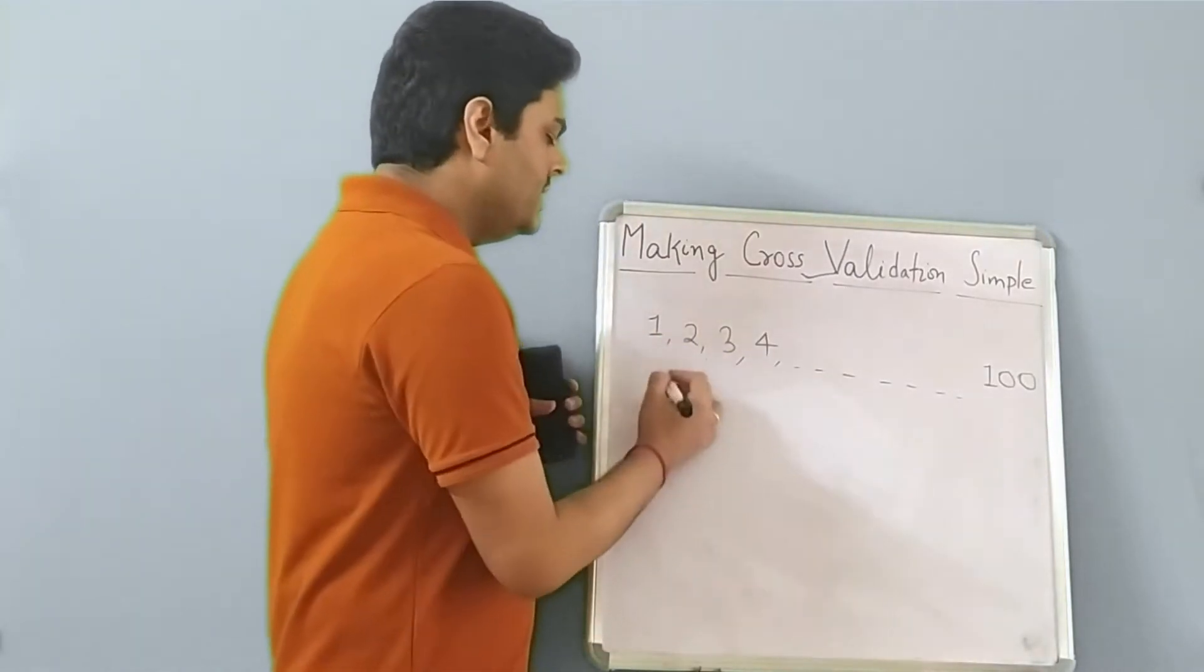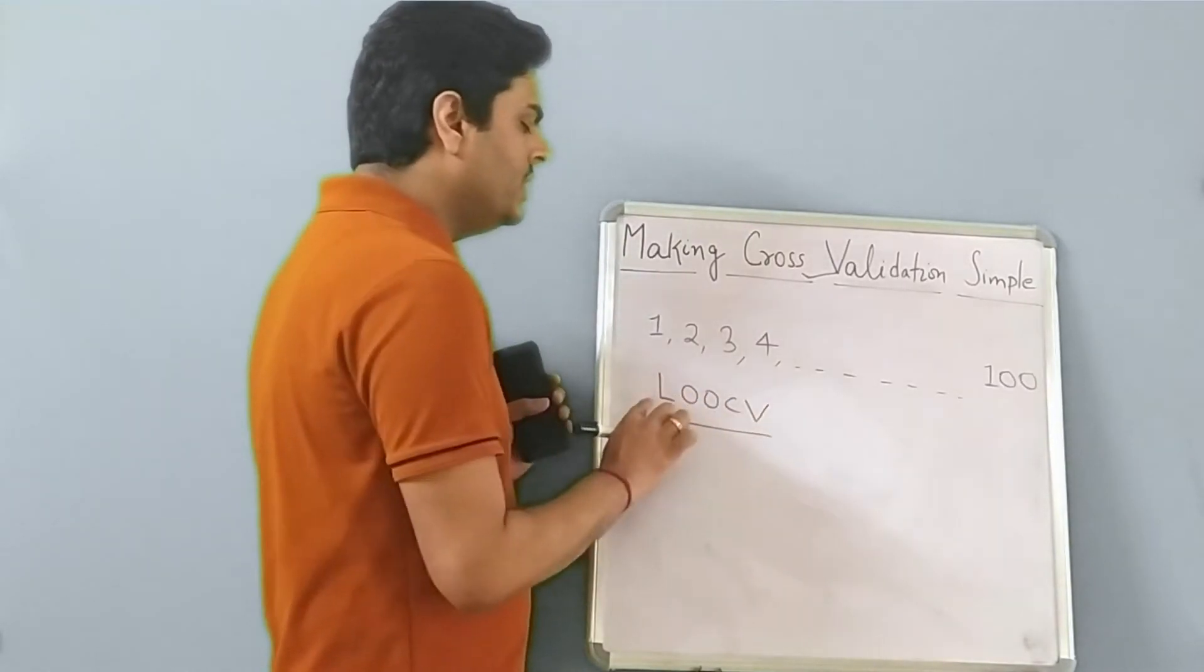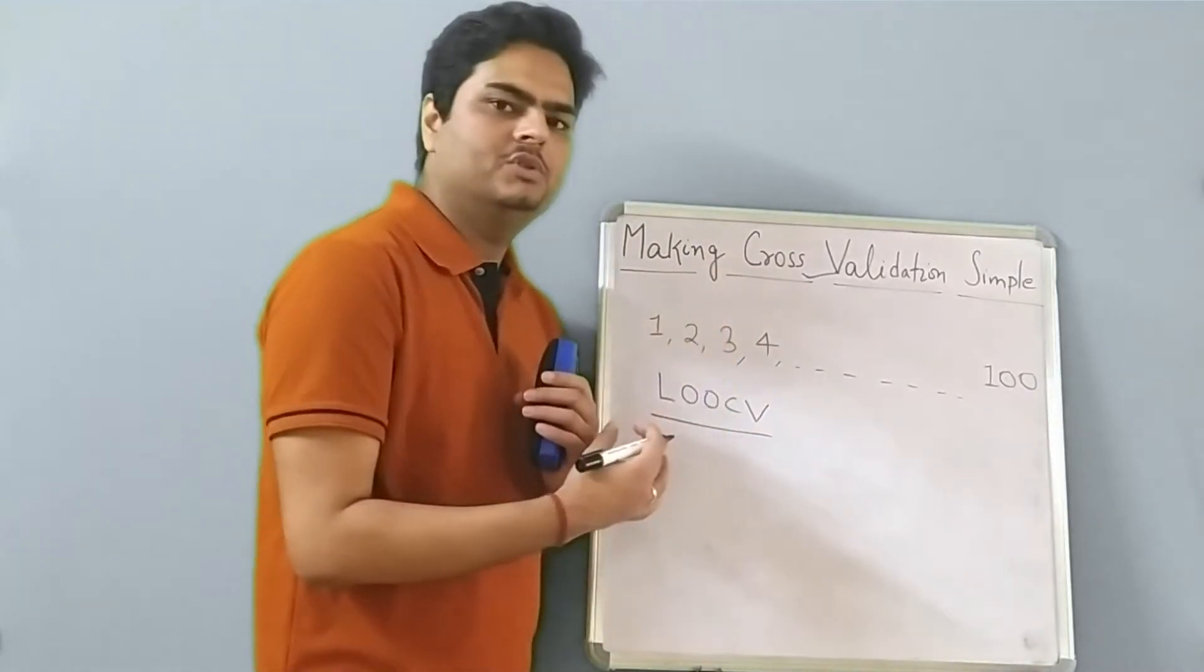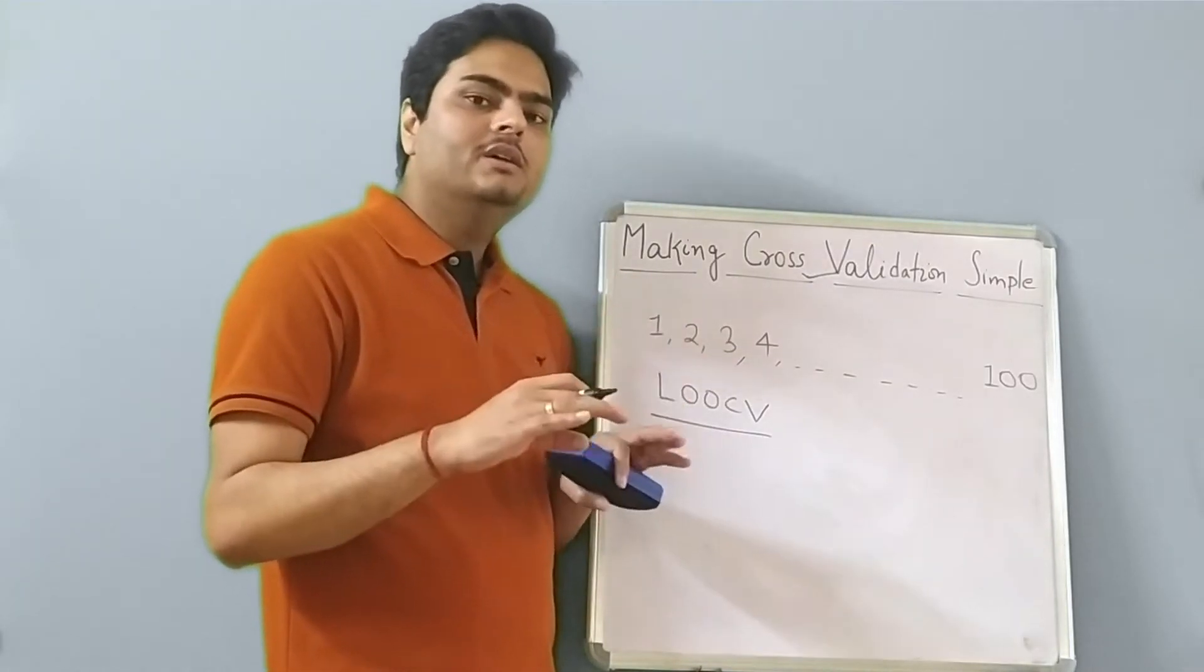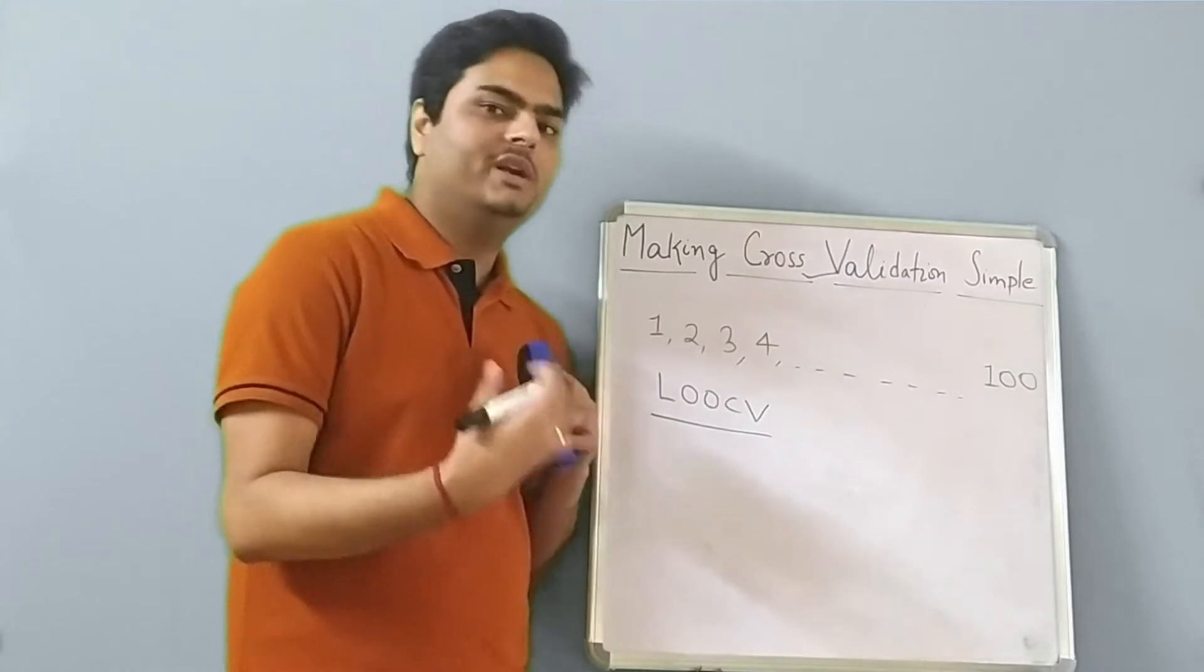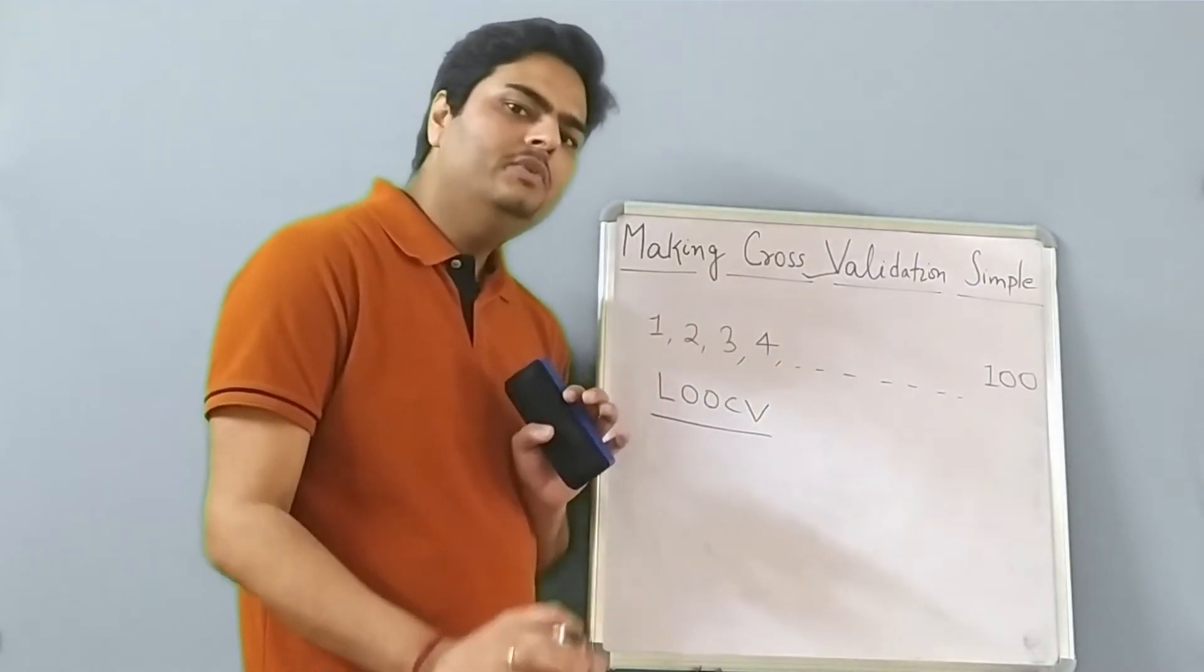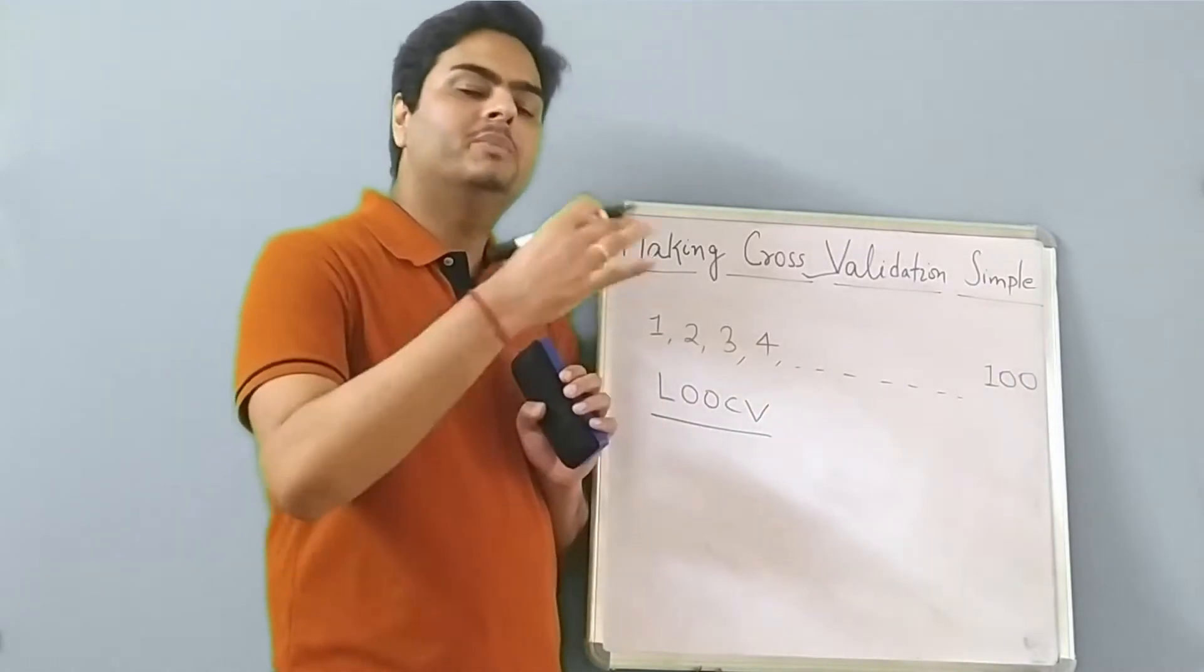The first way is known as LOOCV. LOOCV stands for leave one out cross validation. Now imagine in your data. First of all, what was the problem with the previous approach? The problem with previous approach is when you broke your data in 70-30, then 30% of your data or 30% information of your data, you are not using for model training. Machine learning is all about learning from the data. So more and more data you give to your model, your model can learn better. If you take 30% out, then your model learning capability decreases. That was the problem with previous approach.